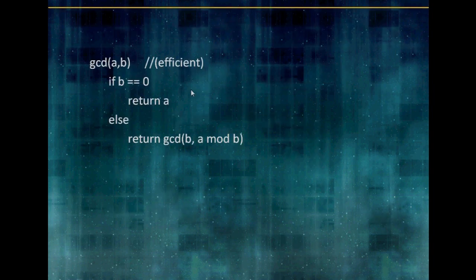And here it is: GCD of A and B, the efficient version. If B equals 0, we return A. Otherwise, we automatically swap, and then we do B, A mod B.